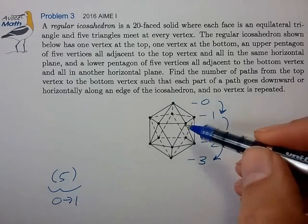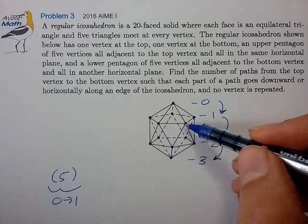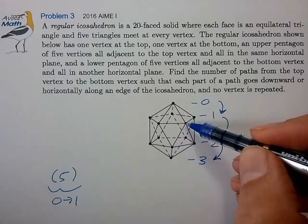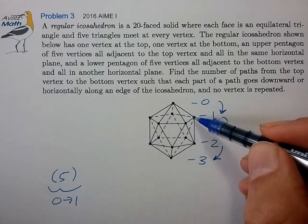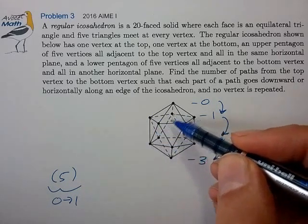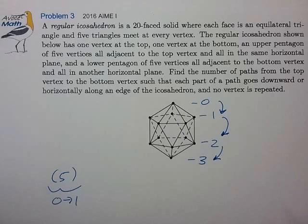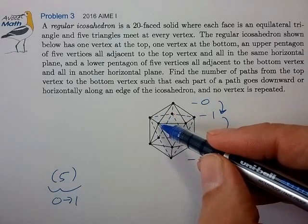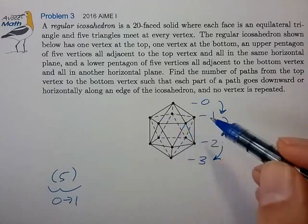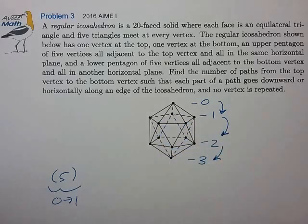Now once we get to level one, we can scoot down to level two in one of two ways, or it looks like we can go one, two, three, four positions clockwise and then scoot down one of two ways in each of those positions, or one, two, three, four positions counterclockwise and then scoot down in one of two ways.